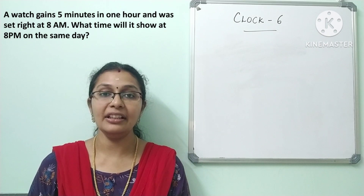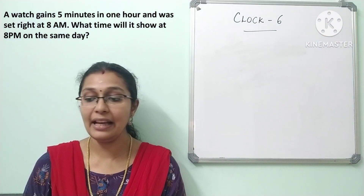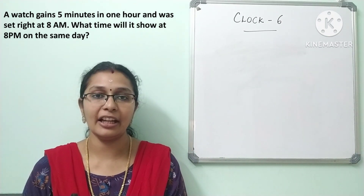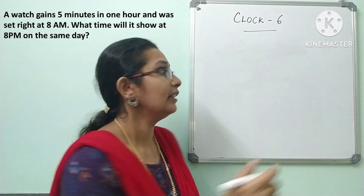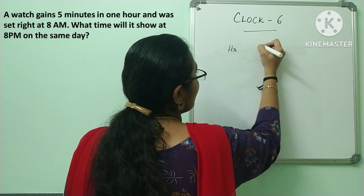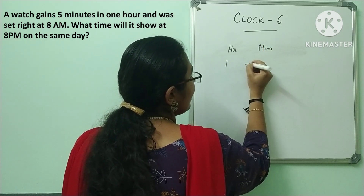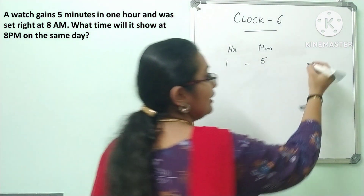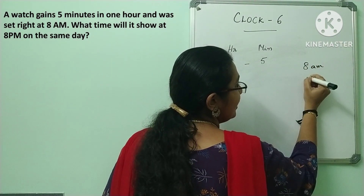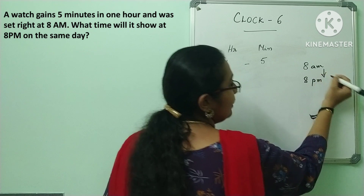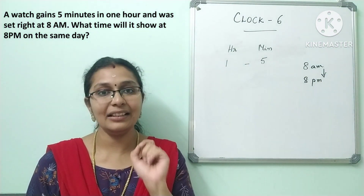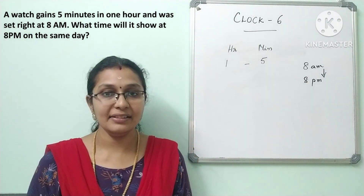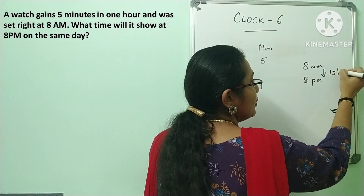From 8 am to 8 pm on the same day, there is a 12 hours difference. So in 12 hours, how much time is gained? In one hour, five minutes are gained. From 8 am to 8 pm is a 12-hour gap.